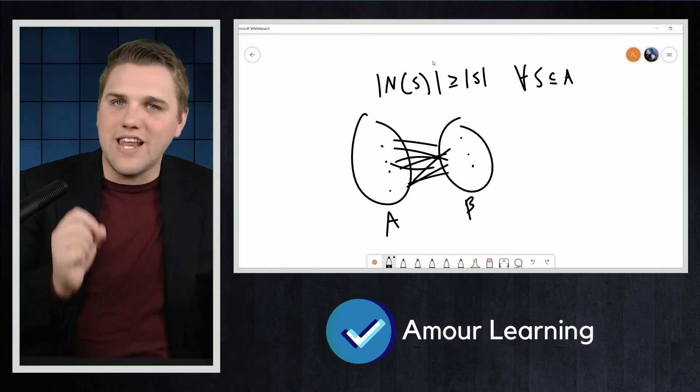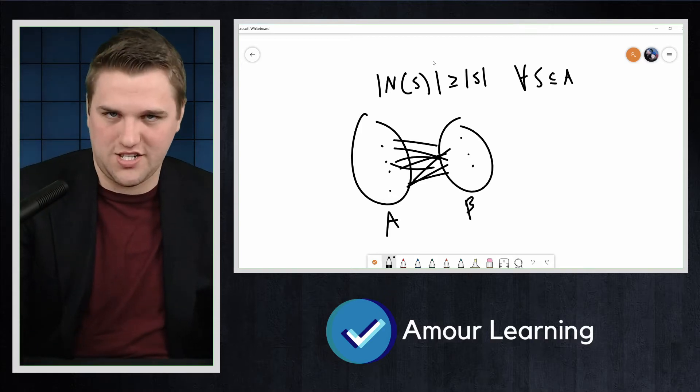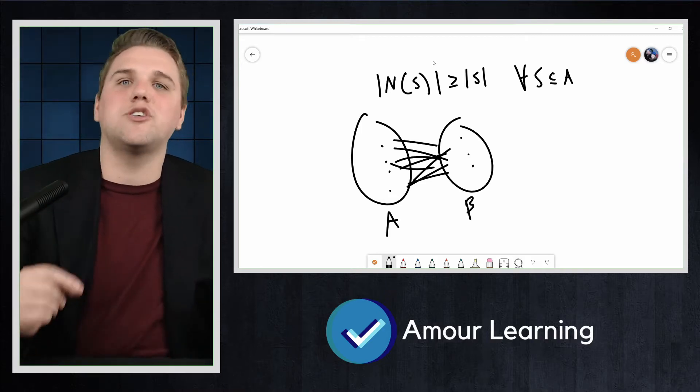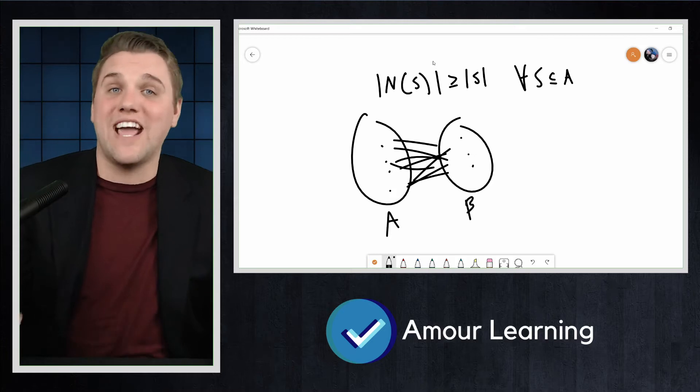The obvious necessary condition is also sufficient. This is a theorem first proved by Philip Hall in 1935.